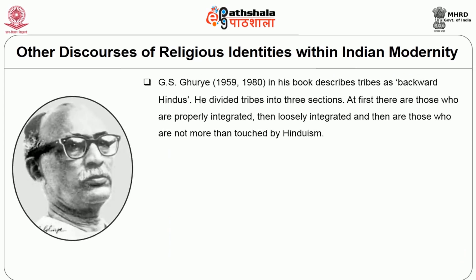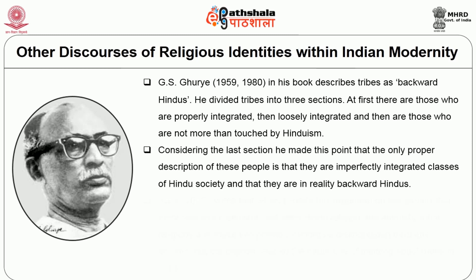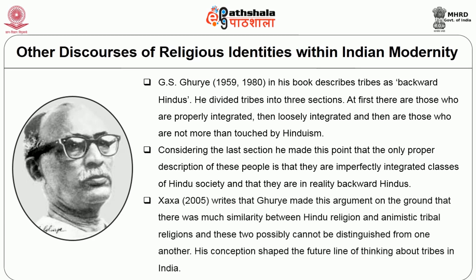G.S. Ghurye, in his book, describes tribes as backward Hindus. He divided tribes into three sections: those who are properly integrated, those who are loosely integrated, and those who are not merely being touched by Hinduism. Considering the last section, he made the point that the only proper description of these people is that they are imperfectly integrated classes of Hindu society and that they are backward Hindus. Burjini Shakha writes that Ghurye made this argument on the ground that there was much similarity between Hindu religion and animist tribal religions, and these two possibly cannot be distinguished from one another. His conception shaped the future line of thinking about tribes in India.